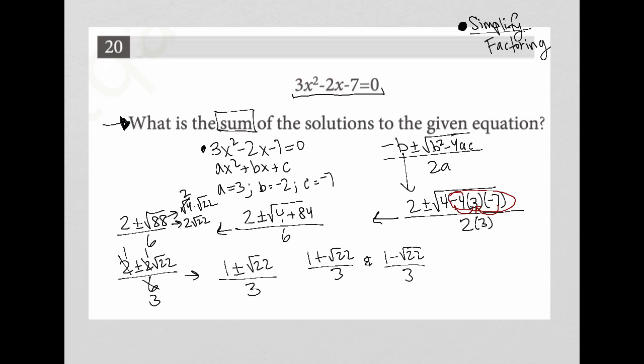So if I replace this and symbol with a plus symbol, that would help me find the sum. I already have a common denominator here. So I can combine these two fractions into a single fraction: 1 plus root 22 plus 1 minus root 22 all over 3. If I simplify the numerator, I have 1 plus 1, which is just 2. Root 22 minus root 22 cancels out.